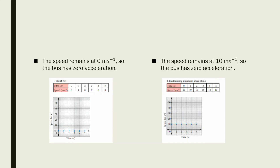First, if the bus is said to be at zero acceleration, the speed of the bus is either zero or constant. In the first graph the bus remains at zero meters per second, so it is at rest and has zero acceleration. In the second graph it maintains a constant speed of 10 meters per second, so the bus again has zero acceleration.